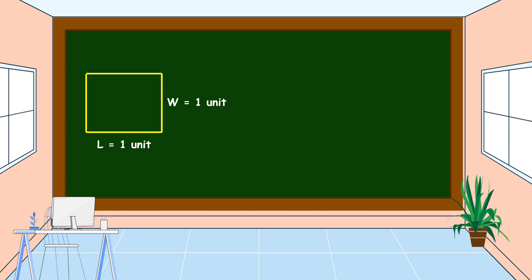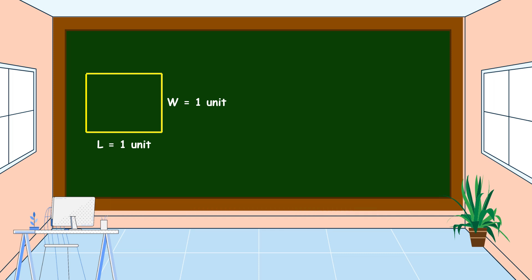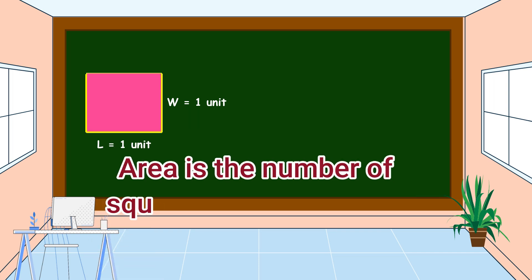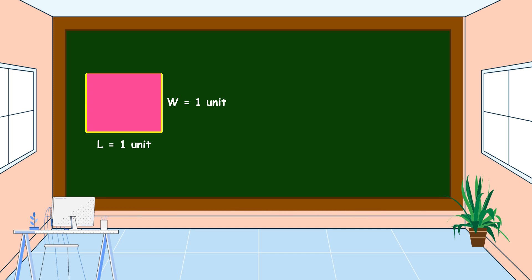As we know, a square is a special kind of rectangle which has four equal sides. What do we call the number of square units in a region? Yes, you are right — we call it area. Area is the number of square units in a region.